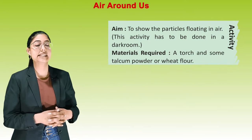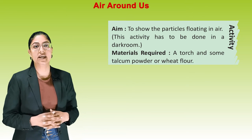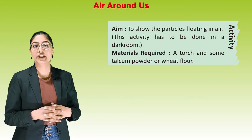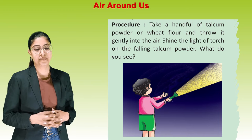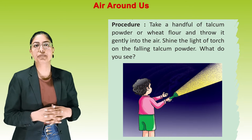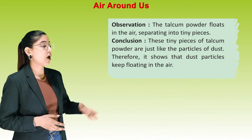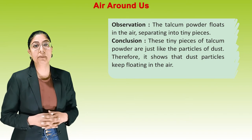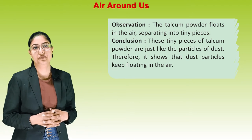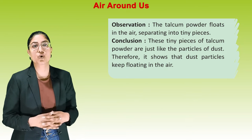Another activity: to show the particles floating in air — this activity has to be done in a dark room. Material required: a torch and some talcum powder or wheat flour. Procedure: take a handful of talcum powder and throw it gently into the air, then shine a torch on the falling powder. Observation: the talcum powder floats in the air, separating into tiny pieces. Conclusion: these tiny pieces are just like dust particles, showing that dust particles keep floating in the air.